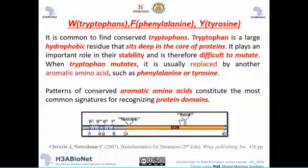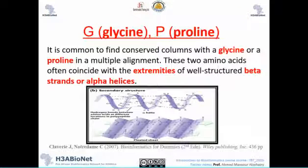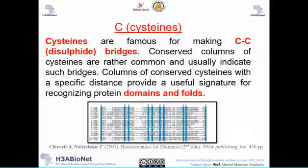You can also find glycine or proline at the extremities of beta strands or alpha helices — so if you see conserved columns of glycine or proline, you can know this marks the extremity of a well-structured beta strand or alpha helix. Cysteine is famous for making disulfide bridges, and conserved columns of cysteine can be a signature for recognizing protein domains and disulfide bridges, as you can see in the pictures.